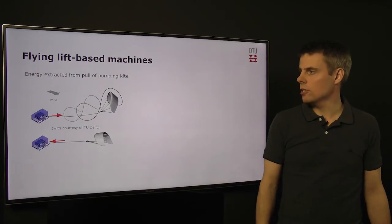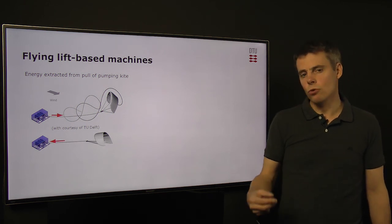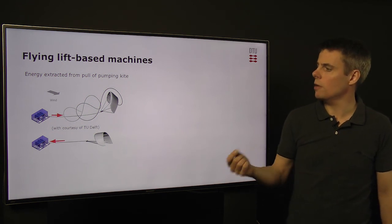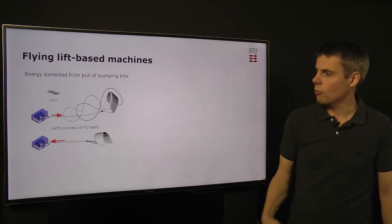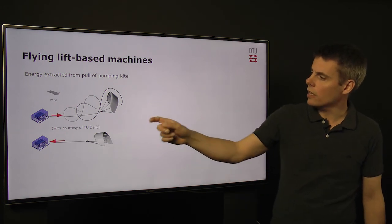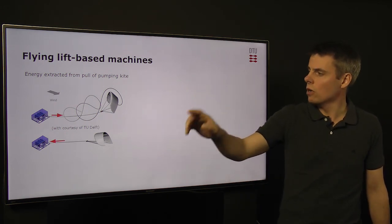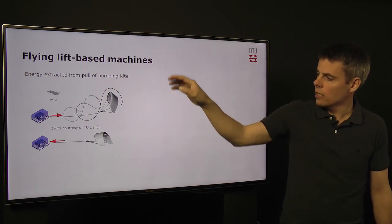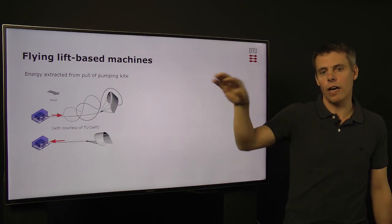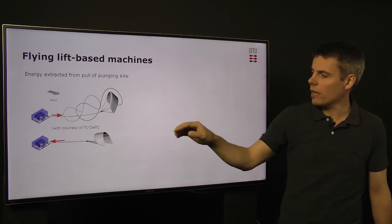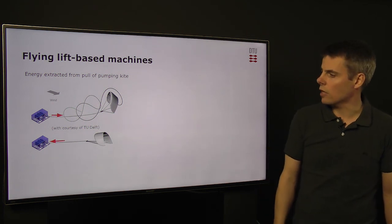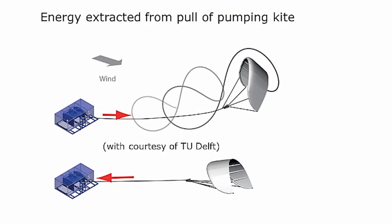The flying lift-based machines are a little bit more difficult to define a power coefficient based on the swept area because the swept area depends on how you are flying the kite. The principle of operation is that you are flying the kite out, it pulls the cable, and when it is fully extended, you pull back the kite and then you fly it out again. When you pull it back, you try to minimize the aerodynamic forces and lift on the kite.